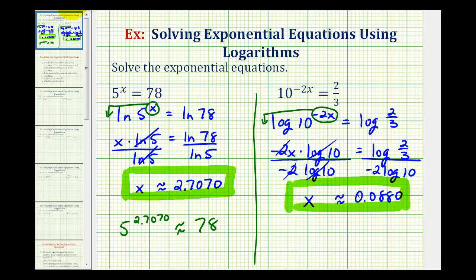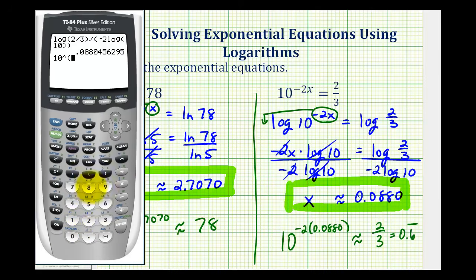And to check this, this means that 10 raised to the power of negative 2 times 0.0880 should be approximately equal to 2 thirds. And 2 thirds as a decimal is equal to 0.6 repeating. So let's go ahead and verify this. And as you can see, it's very close to 2 thirds, so our answer is correct.